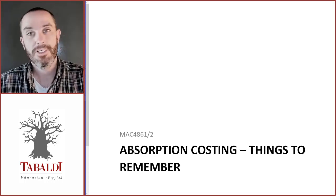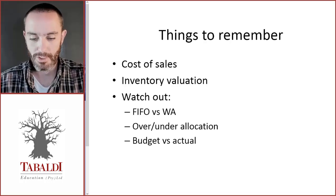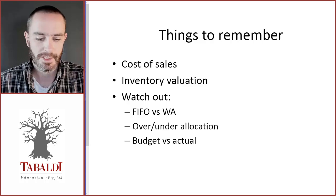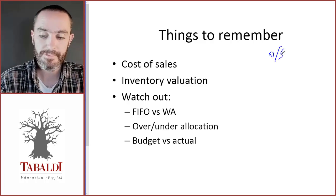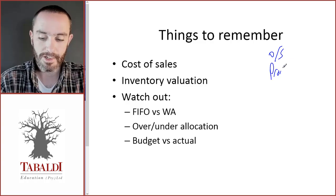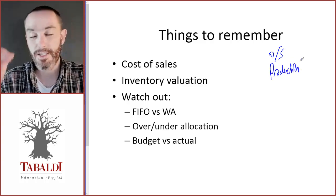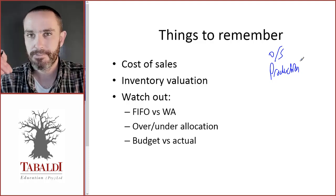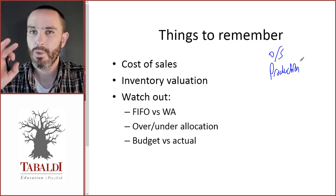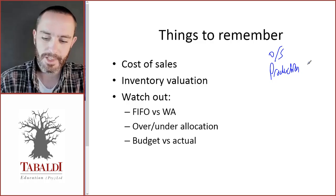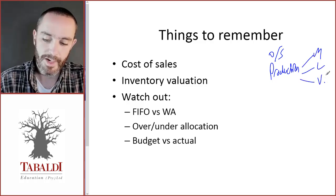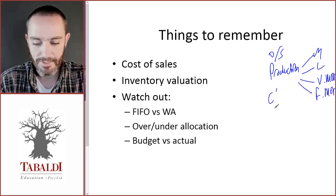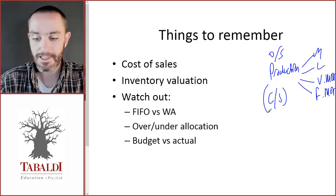Let's look at a few things to remember when we do absorption costing or variable absorption costing. The first thing is cost of sales should be shown as opening inventory plus production costs. The production costs could be shown separately or in total, but remember to show all your workings. If we show it separately, we'll have material, labour, variable manufacturing overheads, and fixed manufacturing overheads, then closing stock which we deduct.